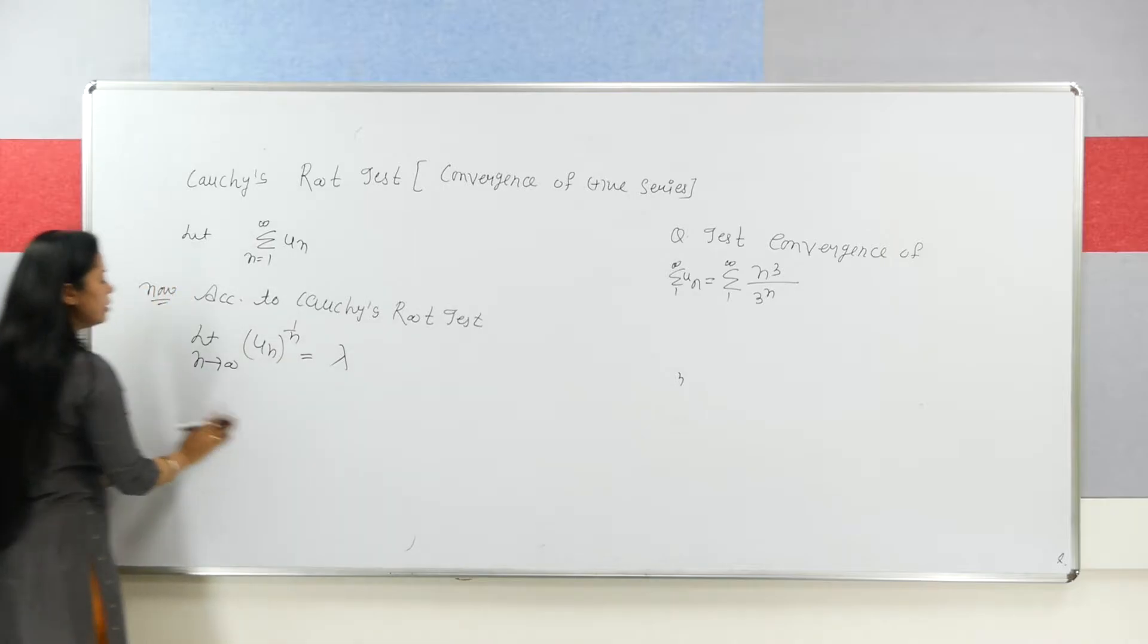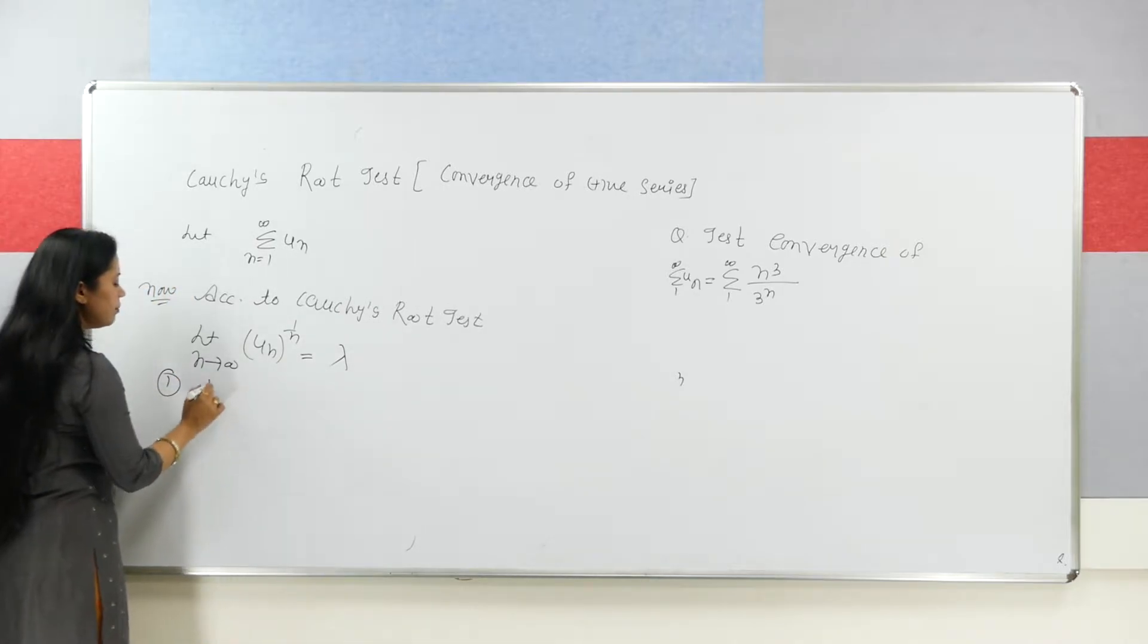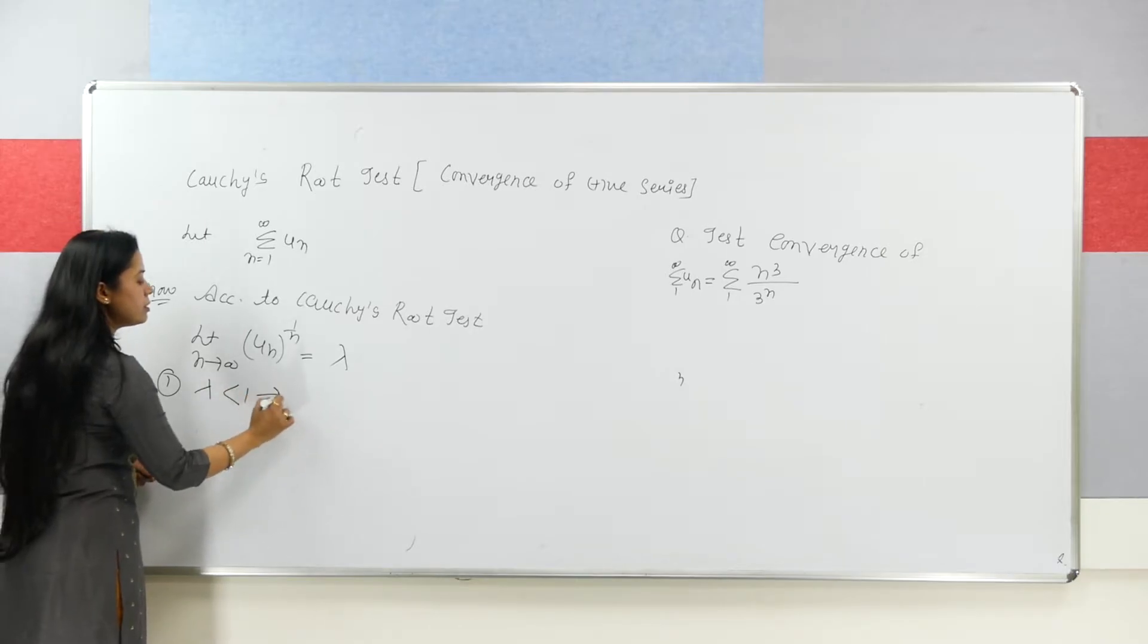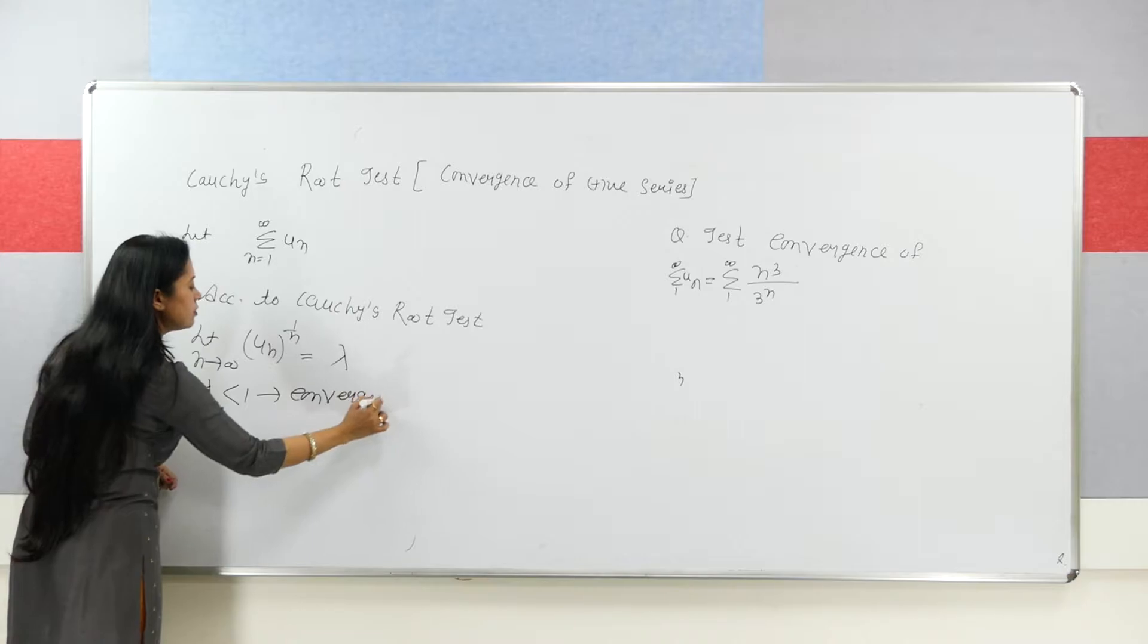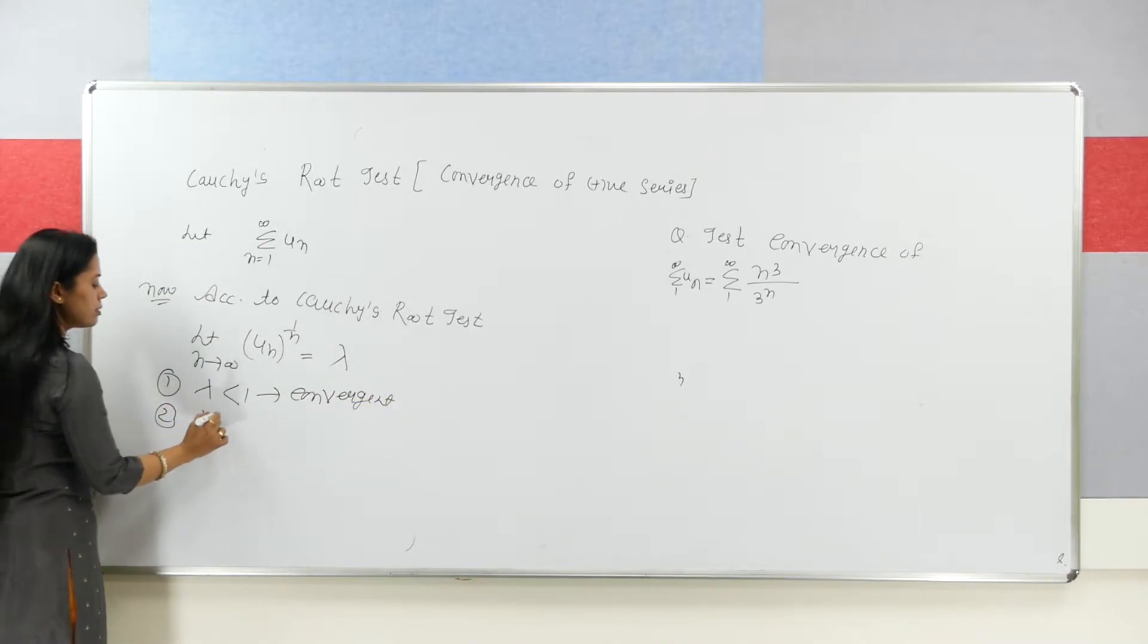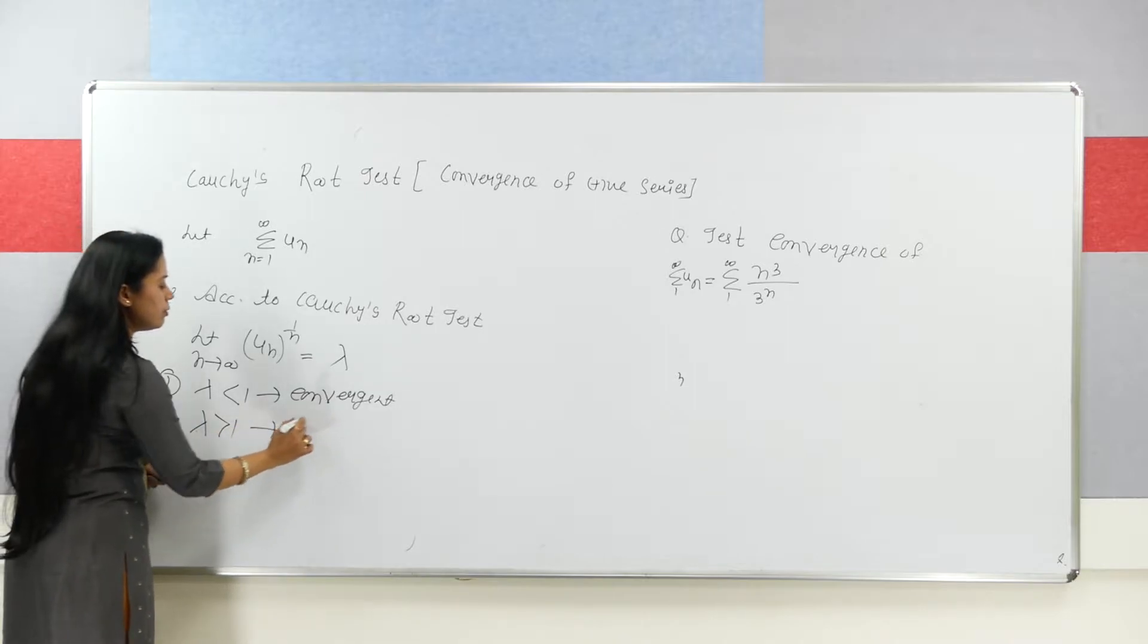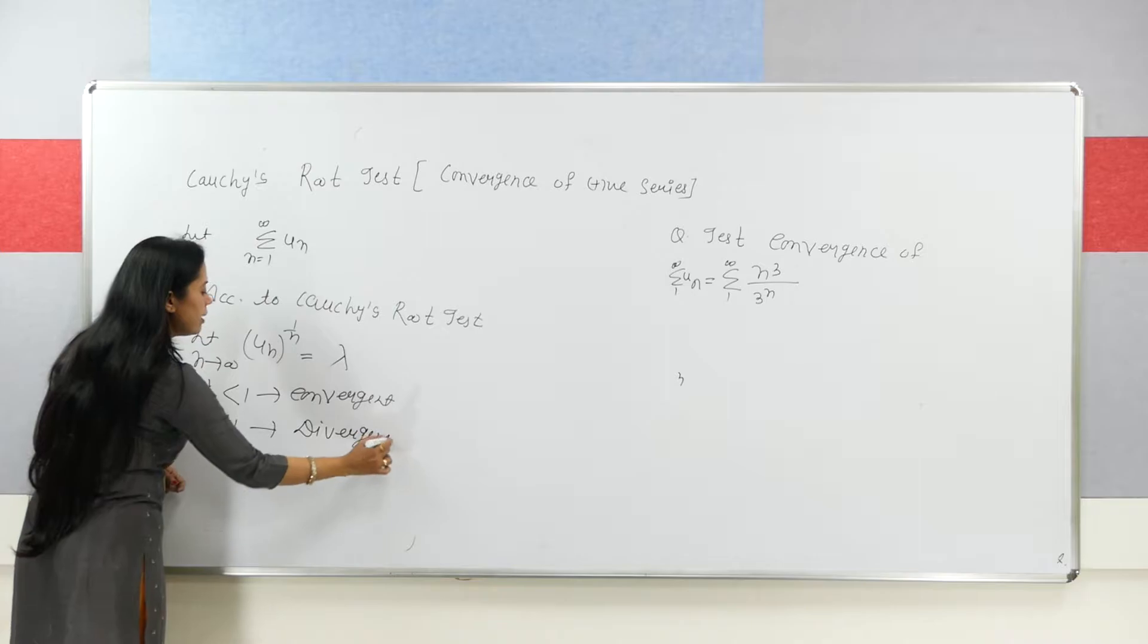First case is when lambda is less than 1, the series will be convergent. Second case will be when lambda is greater than 1, the series will be divergent.